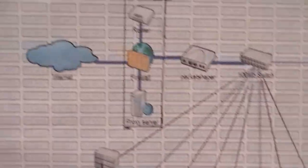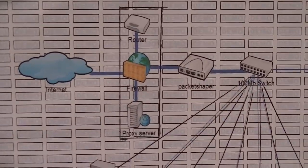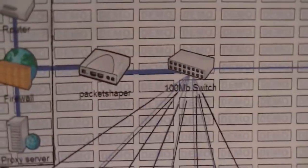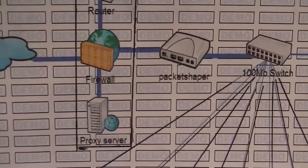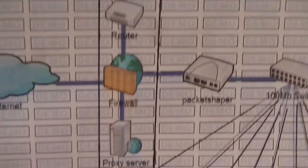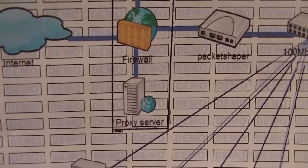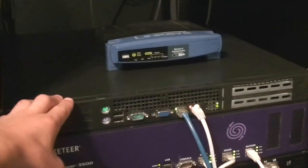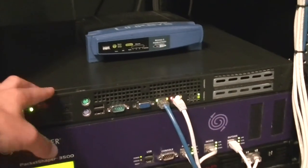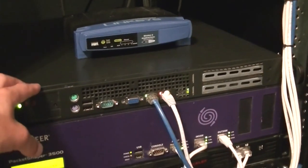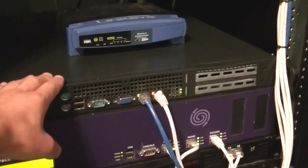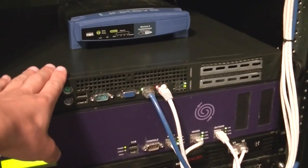On a more advanced topology graph, you can see the internet, the packet shaper, and the firewall. The firewall has firewall, router, and proxy server functions because those are all built into PFSense. The version we're running does everything — it has a proxy server, a router, and a firewall all built in one. That's what's so cool about that software.